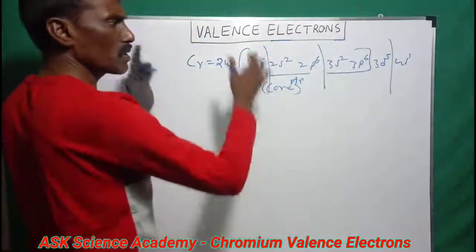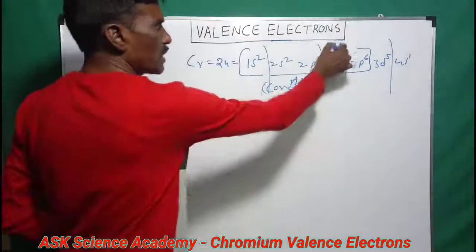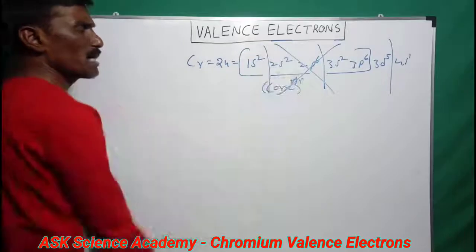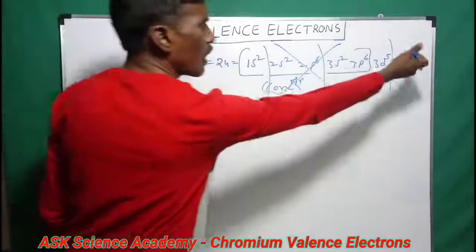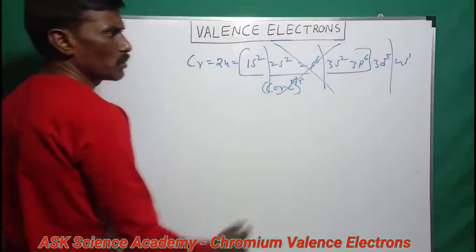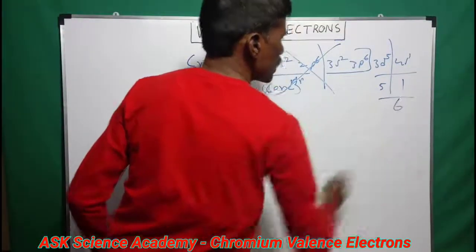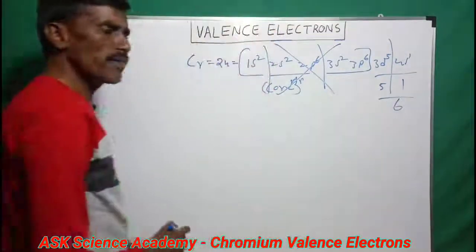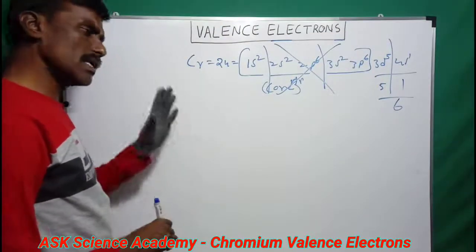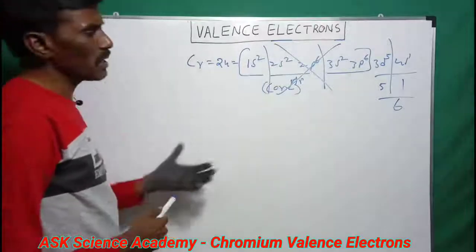The electrons beyond the core configuration are counted as the valence electrons. The valence electrons in chromium are 6. So chromium has 6 valence electrons.